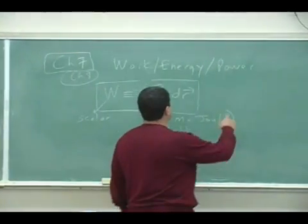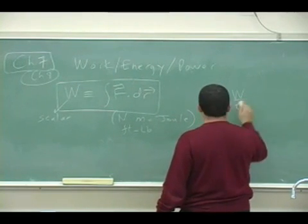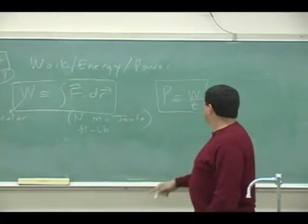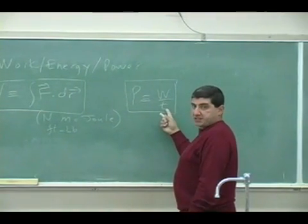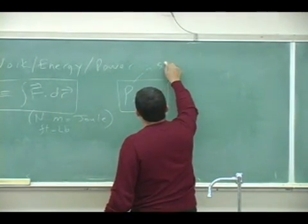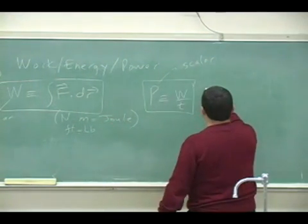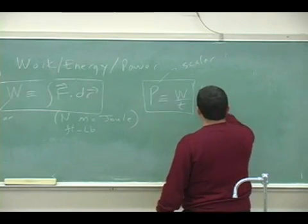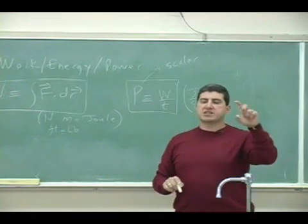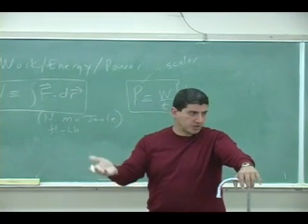Later on, when we look at power, we're going to see power is defined as work divided by time. So if work is a scalar, time is a scalar. You divide scalar, you get a scalar. So power is also defined as a scalar. And its units are joule per second, which is abbreviated as a watt.